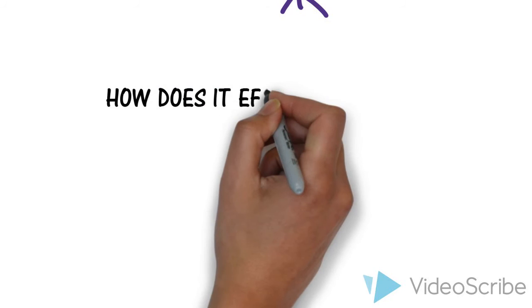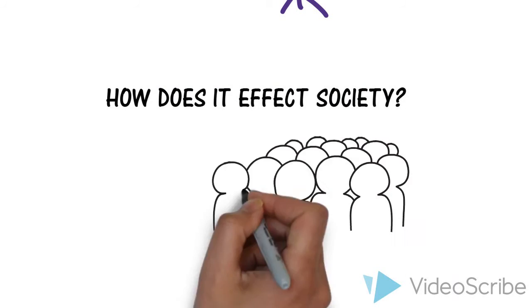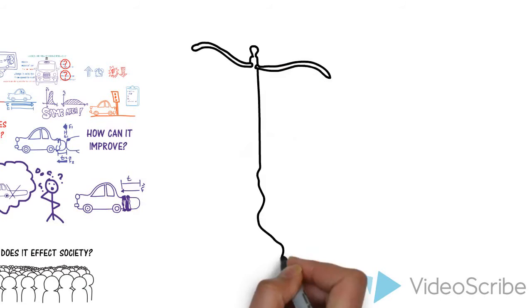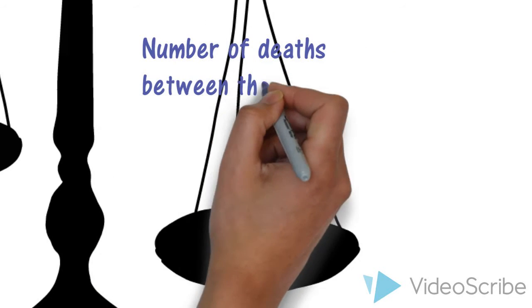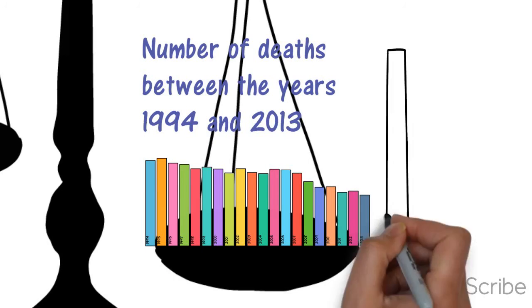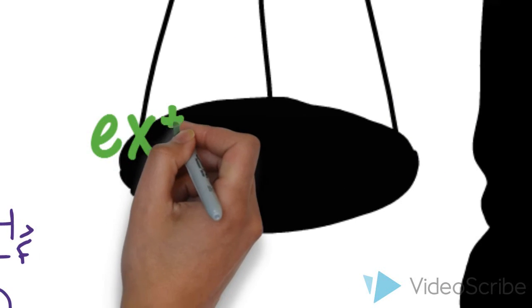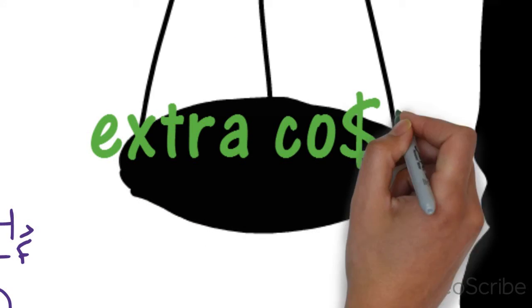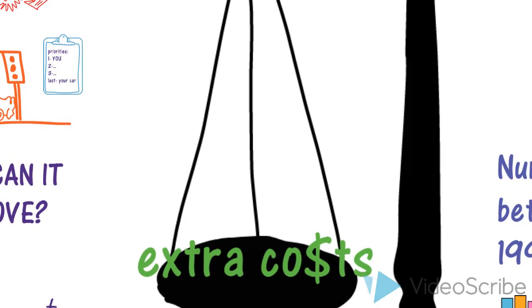How does this technology affect society? Like any technology, there are good and bad effects. According to Statistics Canada, the number of deaths in car accidents have decreased between the year 1994 and 2013. Negative impacts include extra costs and most serious one, the fake sense of security.